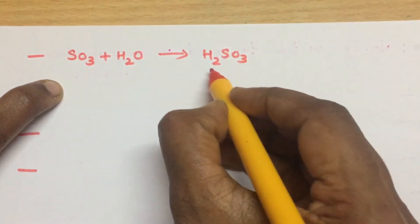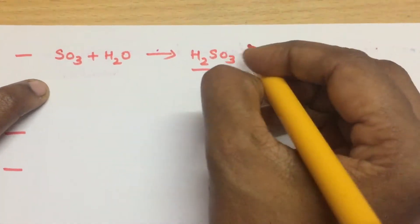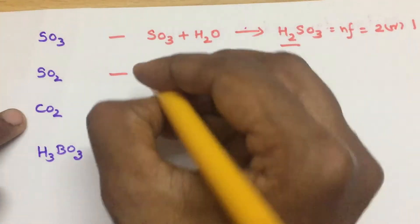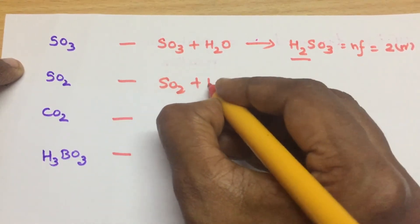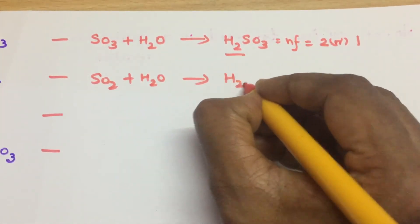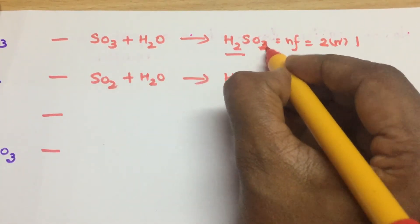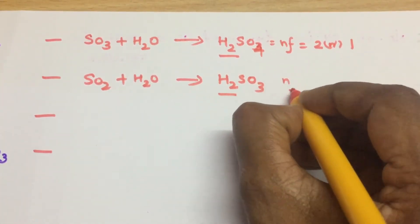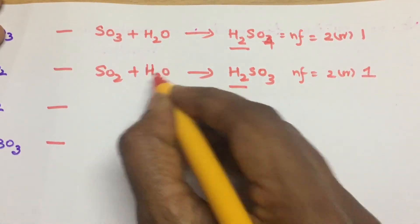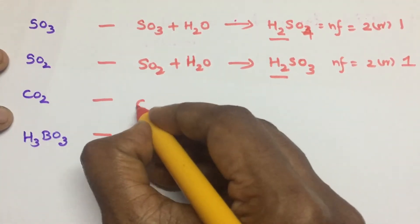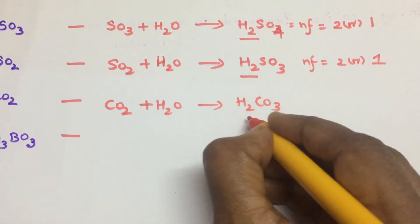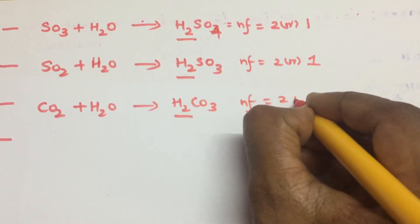For H2SO3, the two hydrogens are capable of ionizing, so N-factor is 2 or 1 depending on the reaction. For carbonic acid H2CO3, similarly N-factor is equal to 2 or 1. You should remember the structures for phosphorus acids to determine which hydrogens are acidic. Please understand logically and remember.